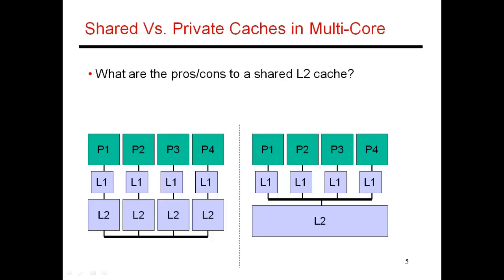Let me first look at this issue about private versus shared. I'm showing two different designs here. The one on the left is a private L2 organization, and just to keep the discussion simple, I'm assuming just an L1, L2 hierarchy. The design on the right has a shared L2 cache. I'm assuming a total of one megabyte worth of storage space for the L2. On the left, I've implemented four L2 banks, each of size 256 kilobytes, whereas on the right, I have one large one-megabyte L2 cache.